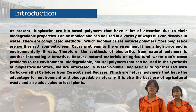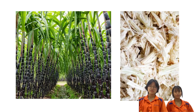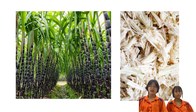Biodegradable natural polymers that can be used in the synthesis of bioplastics include cellulose, starch, and cassava. In our region, agriculture is the main occupation. Sugarcane and corn are the second and fourth most important crops in the province. In sugarcane extracts used to make sugar, there is about 17 to 35% sucrose, which can also be used in vinegar, monosodium glutamate, and soy sauce.